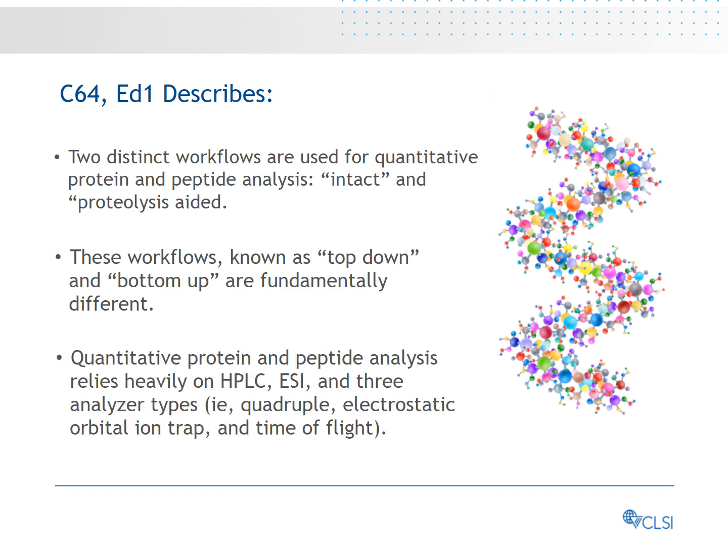Although there is enormous diversity in instruments, quantitative protein and peptide analysis relies heavily on high-performance liquid chromatography (HPLC), ESI, and three analyzer types: quadrupole, electrostatic orbital ion trap, and time of flight.